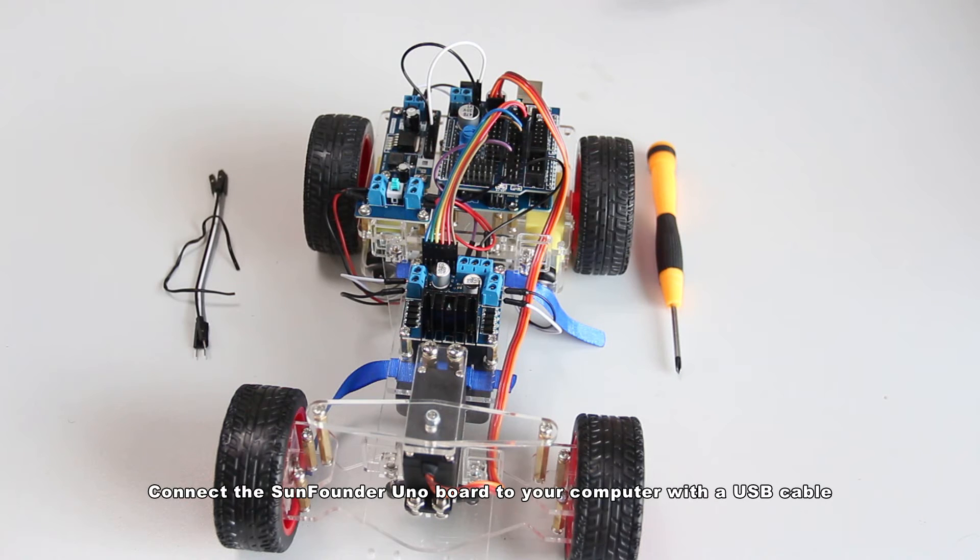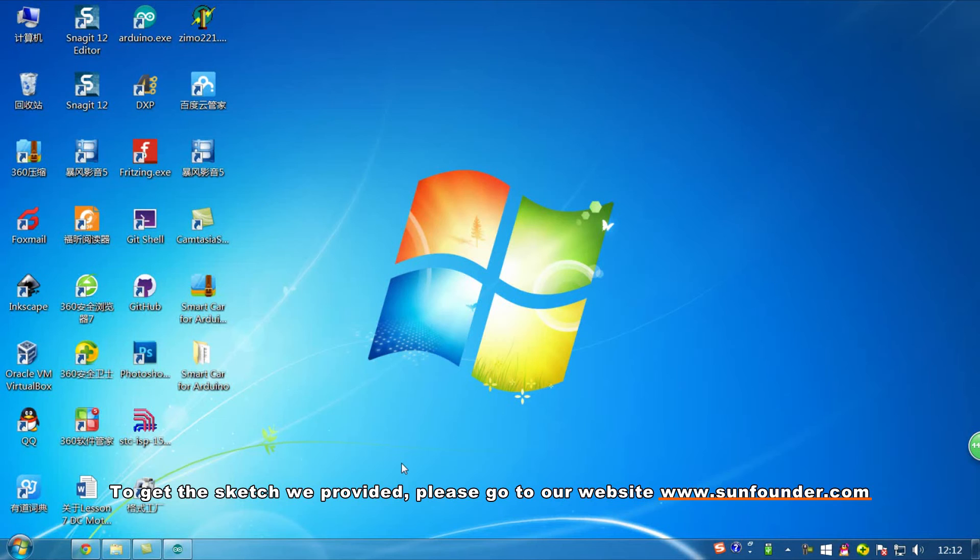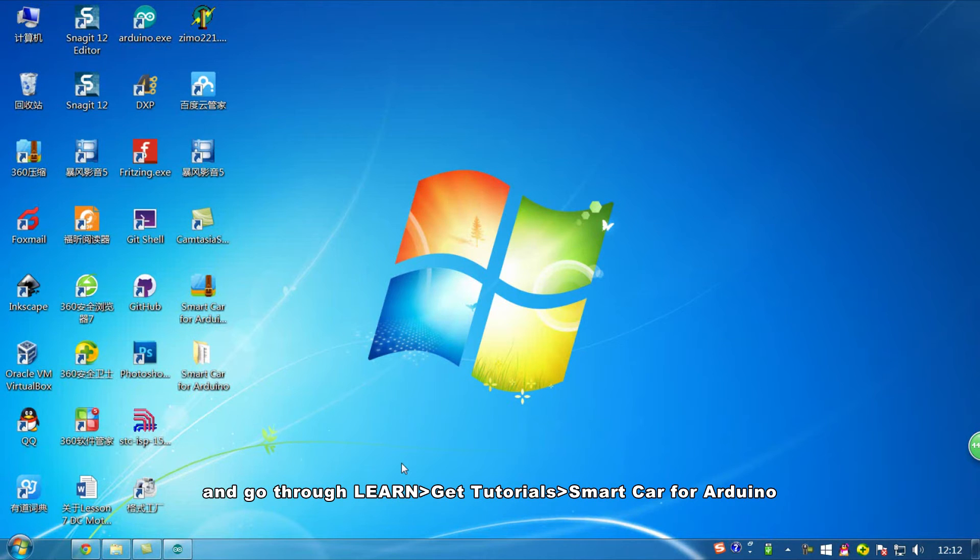Connect the SunFounder Uno to your computer with a USB cable. To get the sketch we provided, please go to our website www.sunfounder.com and go through Learn, Get tutorials, Smart car for Arduino. Download the zip file. Unzip the package.